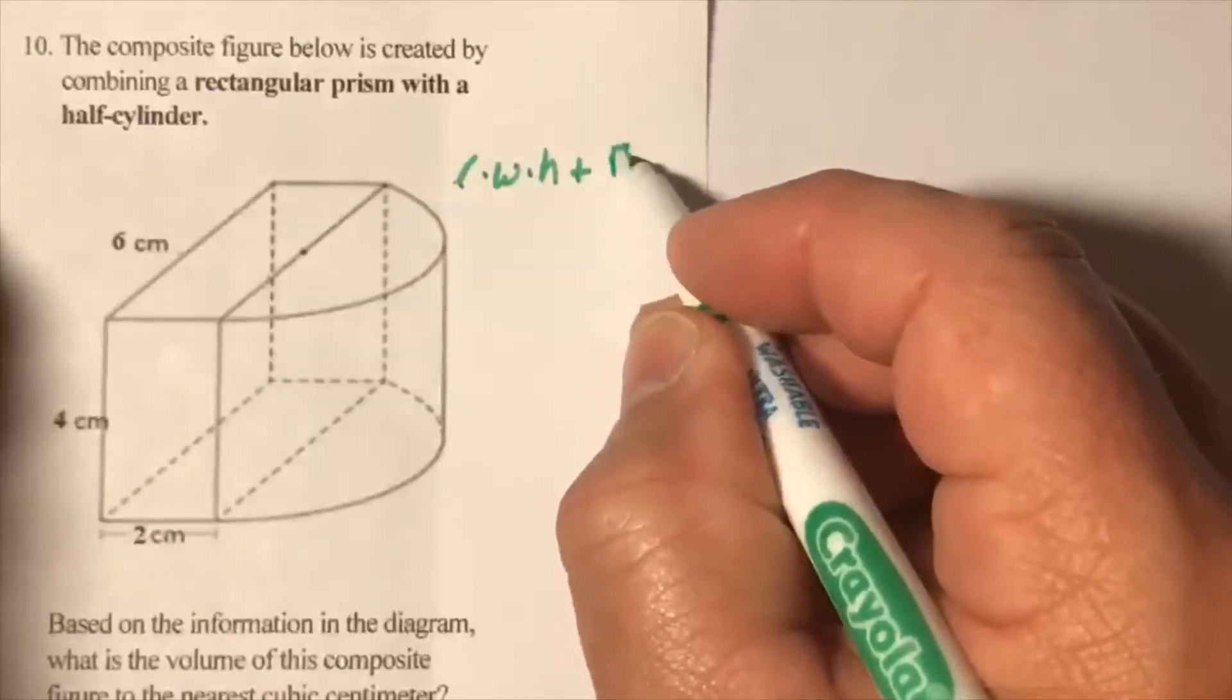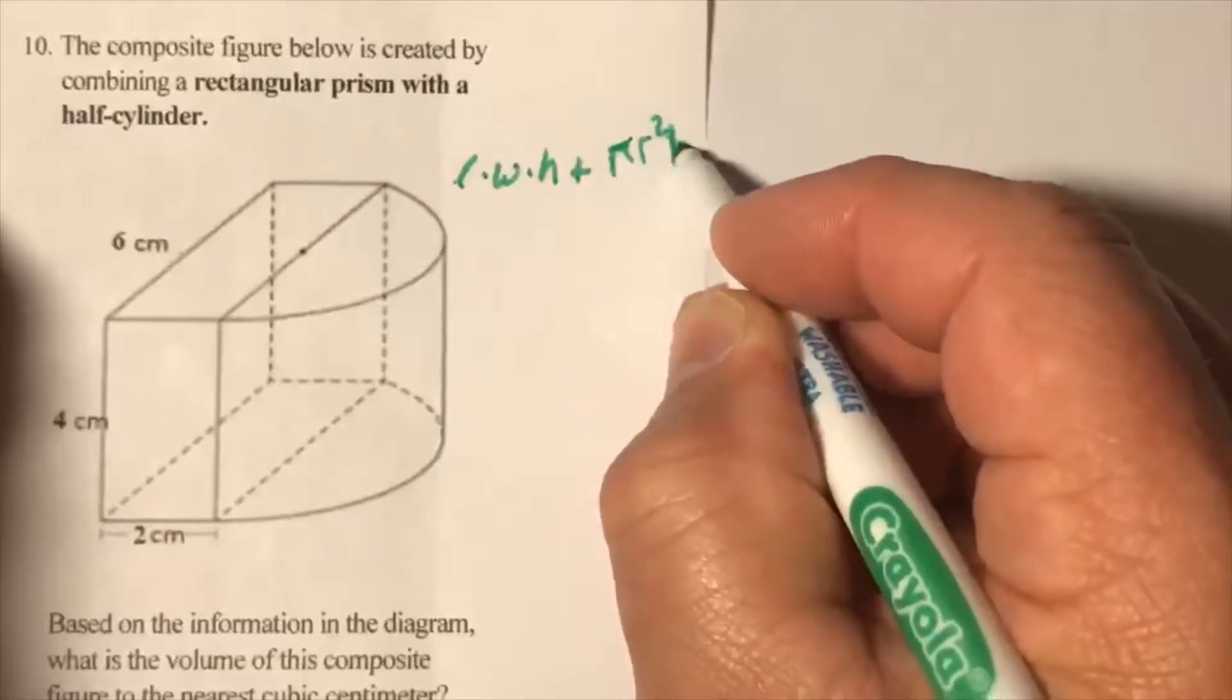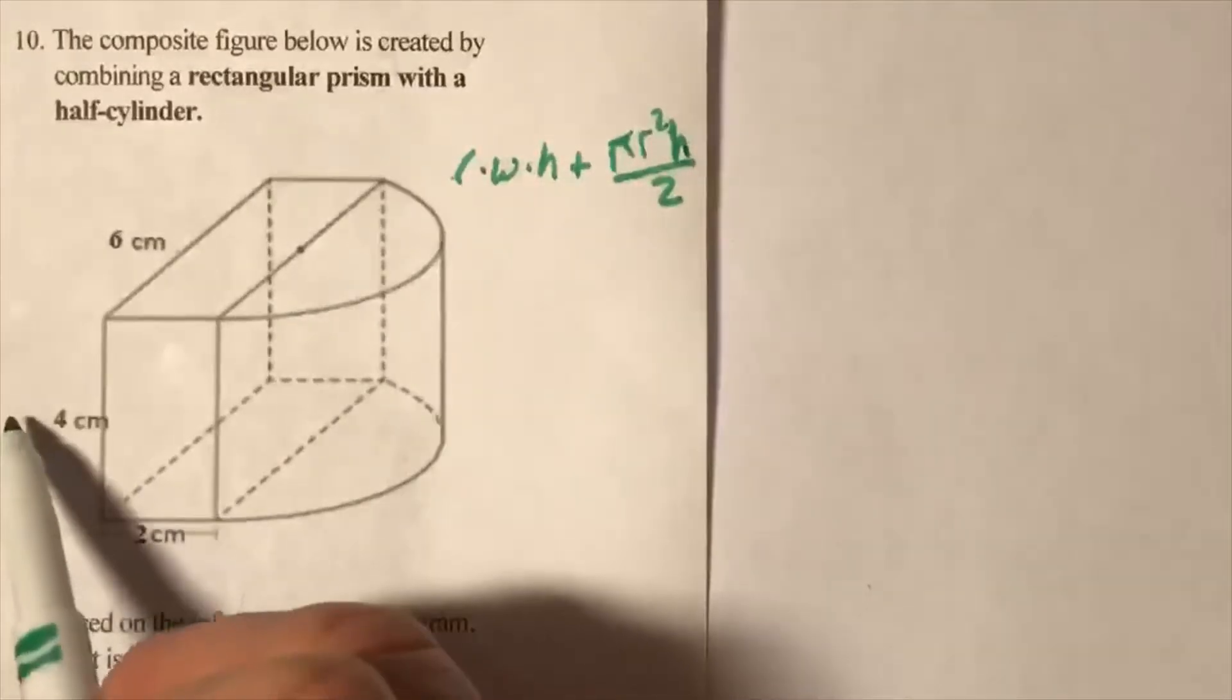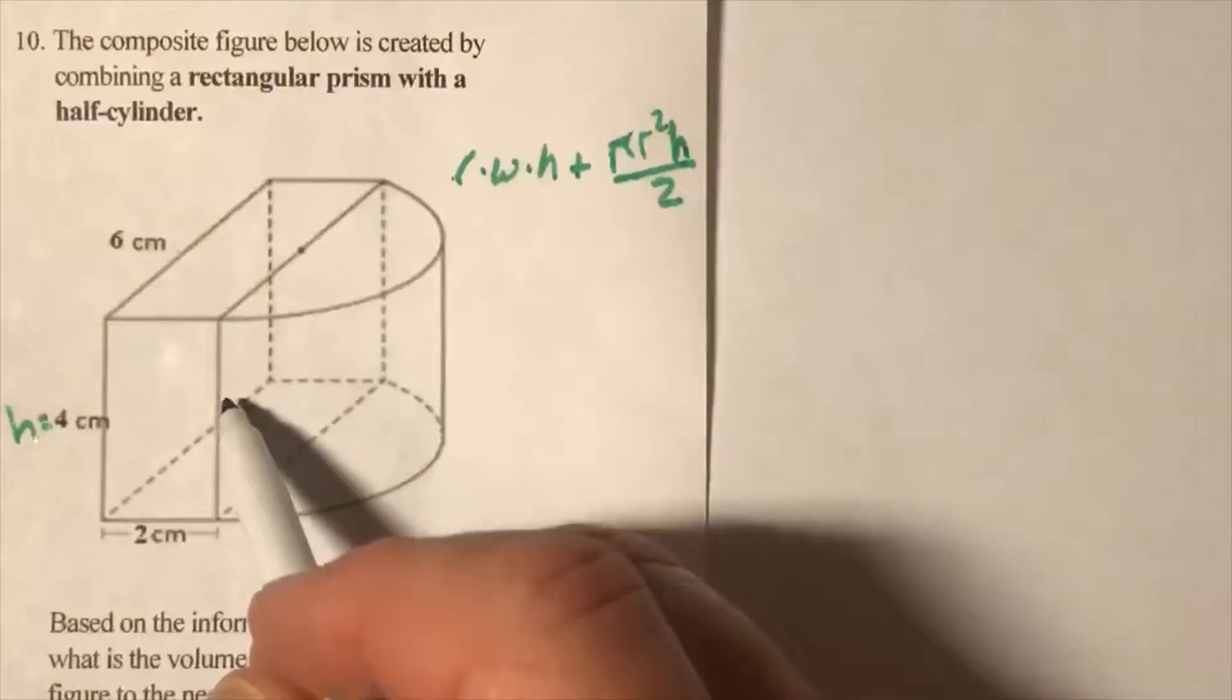Pi r squared h divided by 2. Our height must be here. Of the rectangular prism, it's going to also be my height for the cylinder.